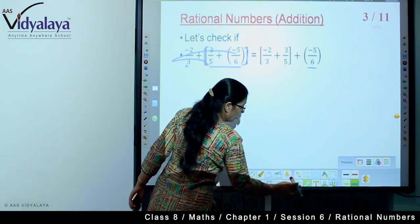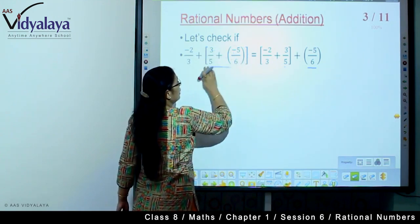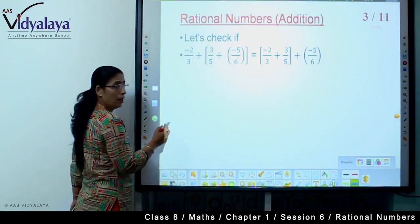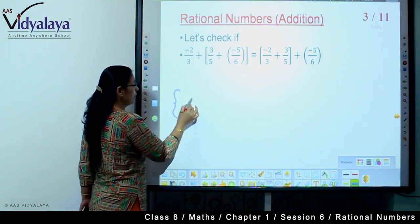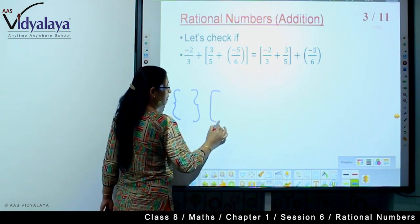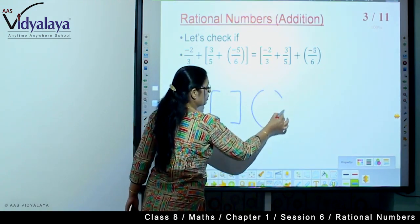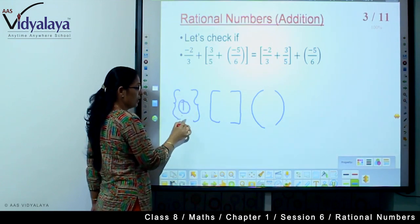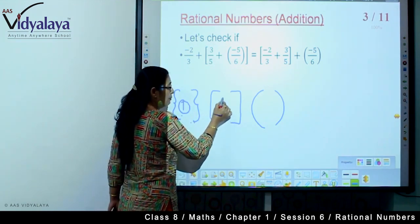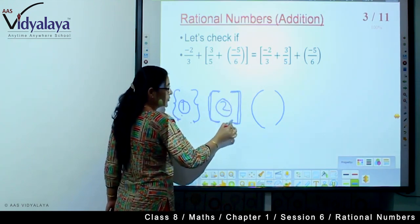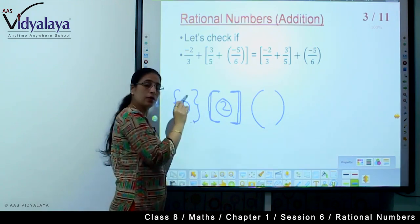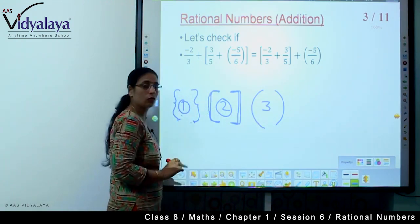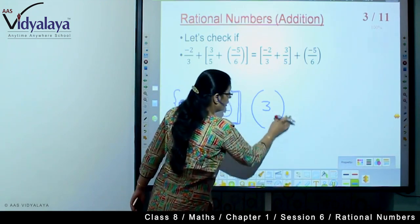Before I start doing this sum, I want to tell you about the principle of brackets. We have three types of brackets. When we have sums, first we solve the digits which are inside this type of bracket, second we solve this bracket, and third we solve this. So we continue with our calculation.